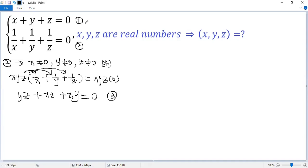Now look at equation 1. Square both sides. So from equation 1, we square both sides. So x plus y plus z squared equals 0 squared. So we expand the left side. So we get x squared plus y squared plus z squared plus 2xy plus 2xz plus 2yz. The right side equals 0.